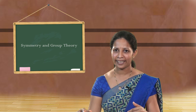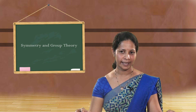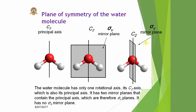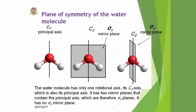Let us see one example — the water molecule. First, in order to identify the planes present in the molecule, we have to identify the principal axis. In the water molecule, we have already seen the C2 axis, which is the principal axis. The water molecule has two planes: one plane bisects all three atoms into two mirror halves, and another plane bisects only the oxygen atom into two parts. Both planes contain the principal axis; therefore, these two planes are vertical planes and are designated as sigma_v.